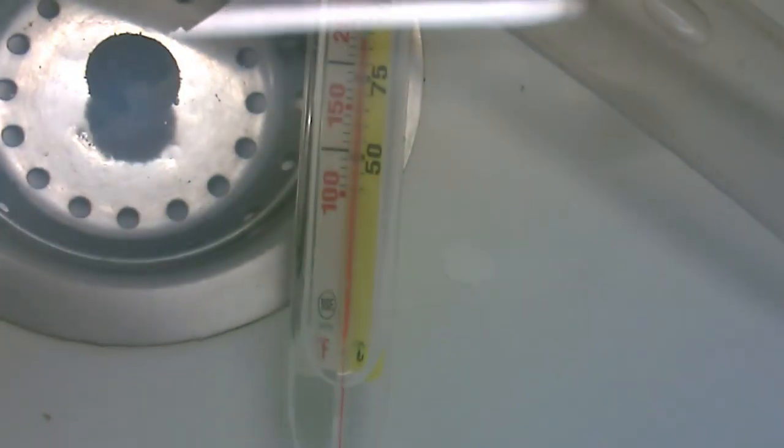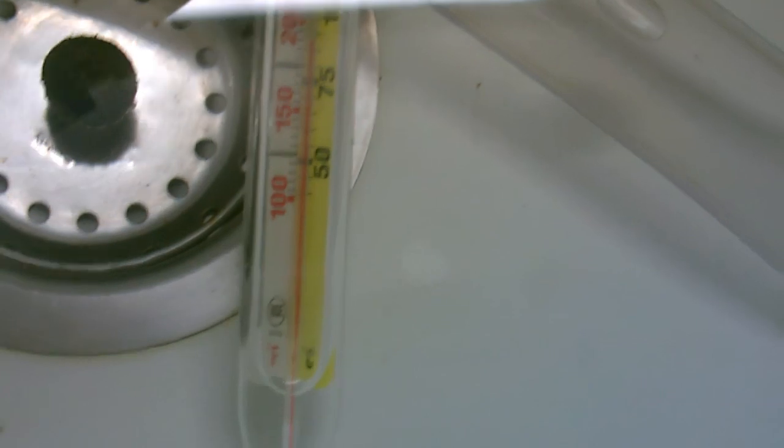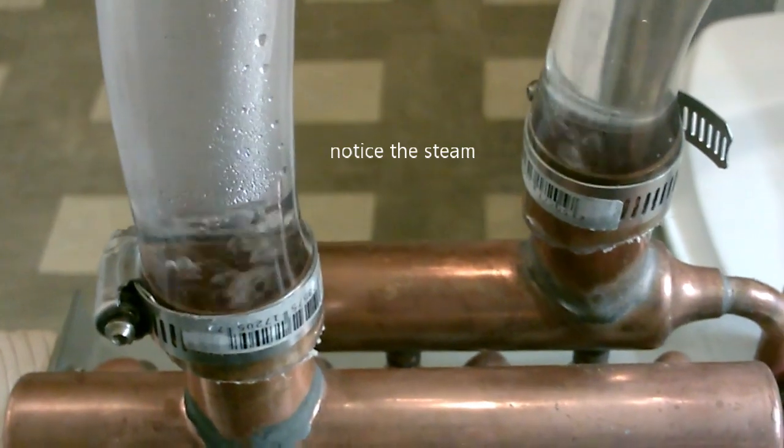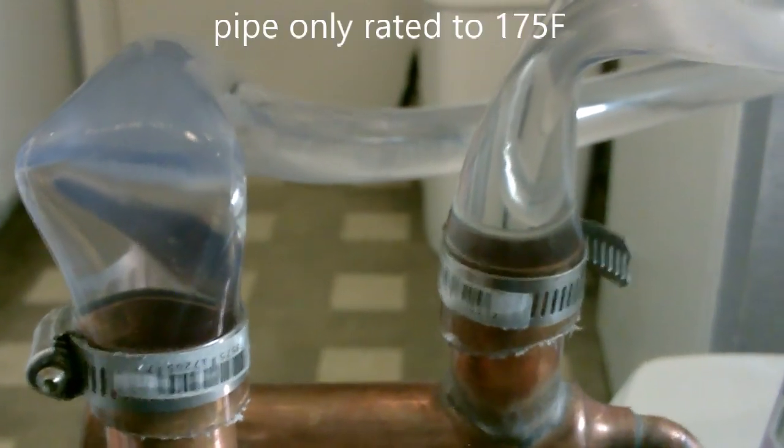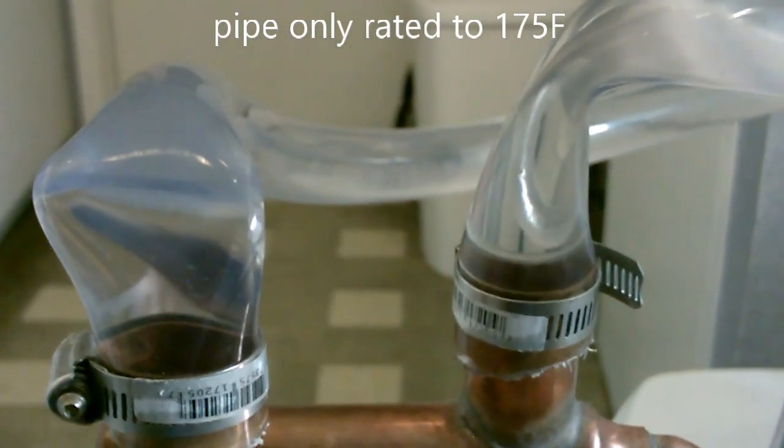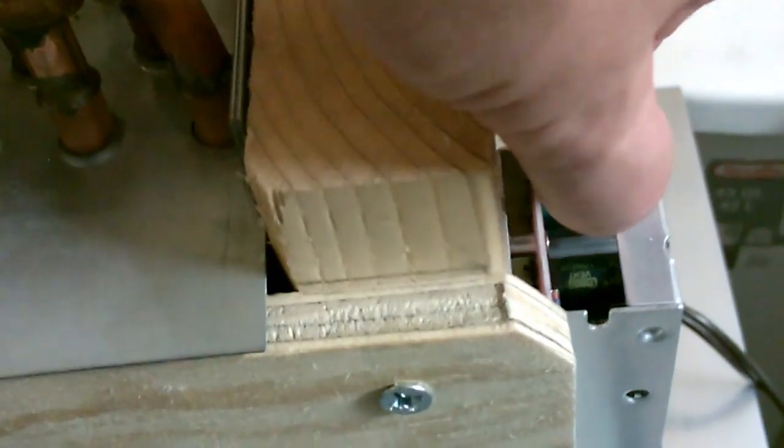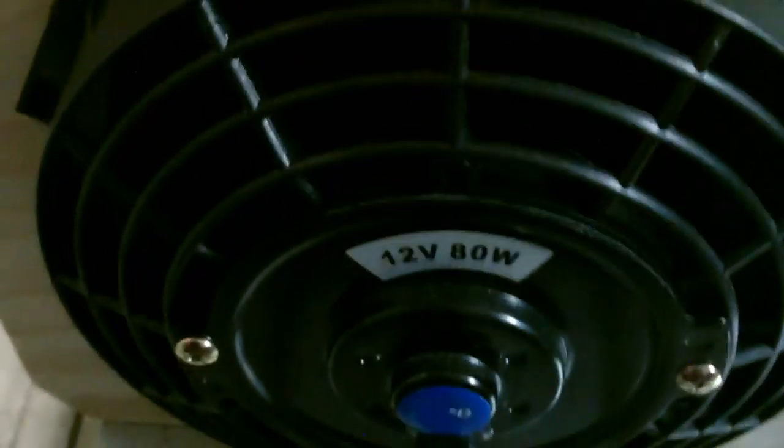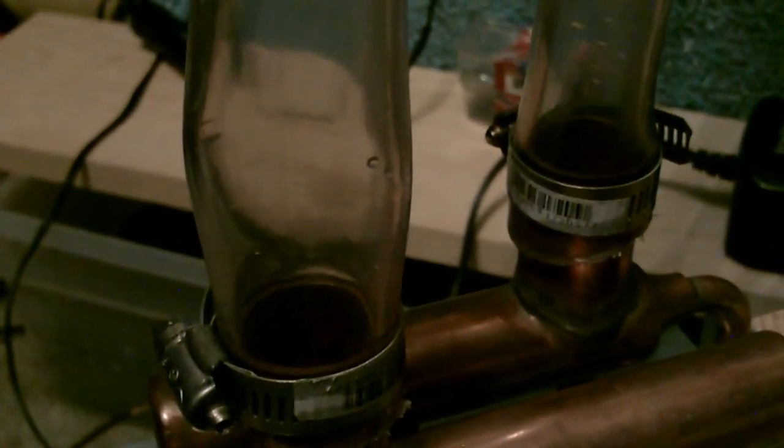Now let's try some super hot water. The pipes get very malleable like that when it gets super hot. By the way the pipe didn't get ruined, it just needed to cool down and I straightened it back out again.